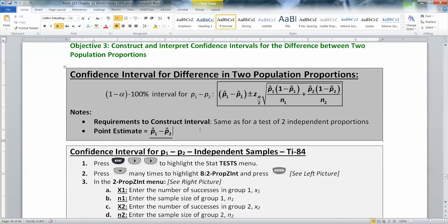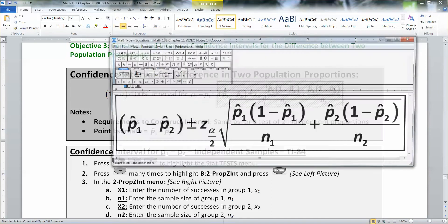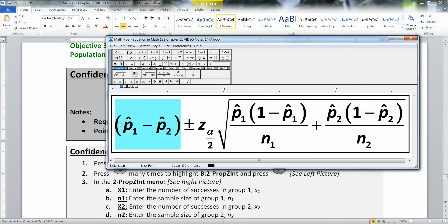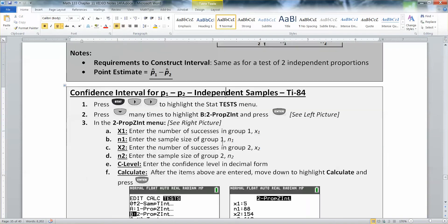And the point estimate, remember, is the center of your interval, which is that p1 hat minus p2 hat that is the foundation for this interval right here. That's the foundation for the interval. And then you add and subtract away your margin of error. And this is your margin of error.